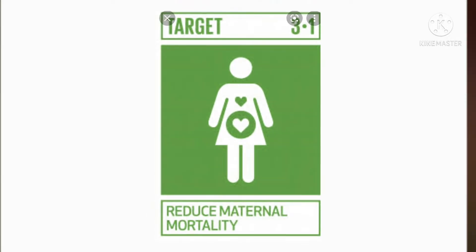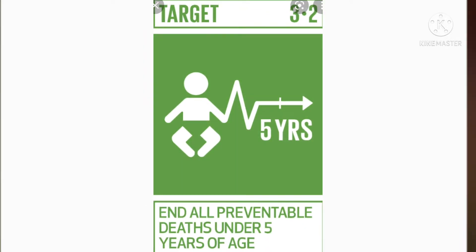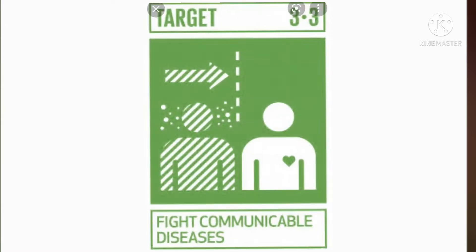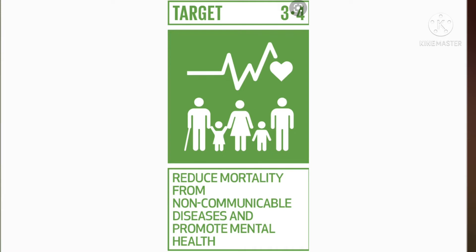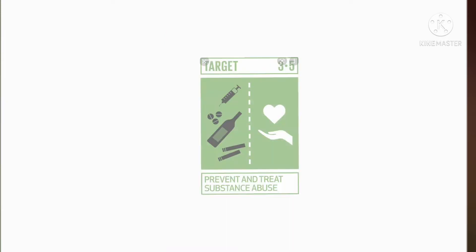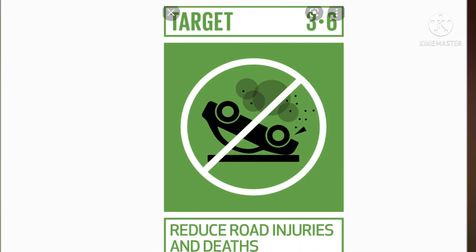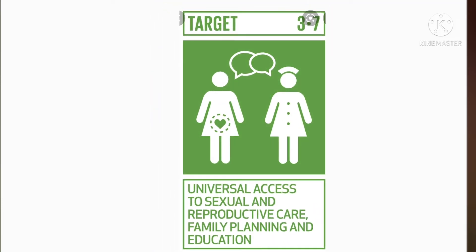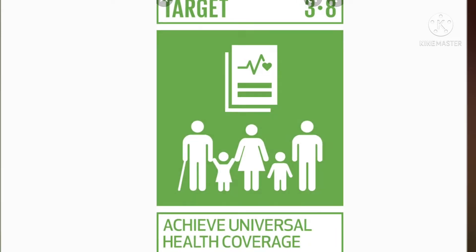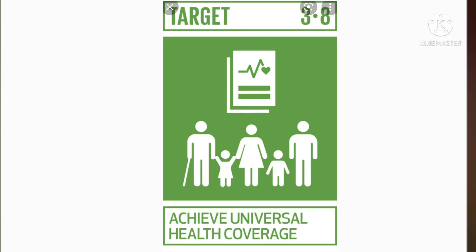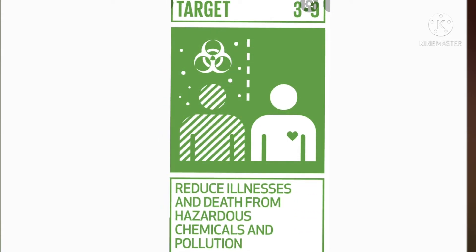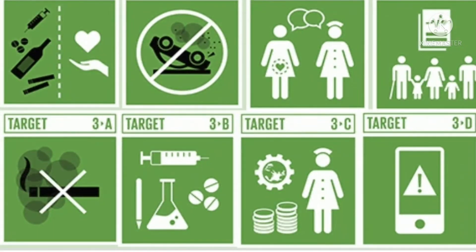Those outcome targets are: reduction of maternal mortality; ending all preventable deaths under 5 years of age; fight communicable diseases; ensure reduction of mortality from non-communicable diseases and promote mental health; prevent and treat substance abuse; reduce road injuries and deaths; grant universal access to sexual and reproductive care, family planning and education; and achieve universal health coverage and reduce illness and deaths from hazardous chemicals and pollutions.